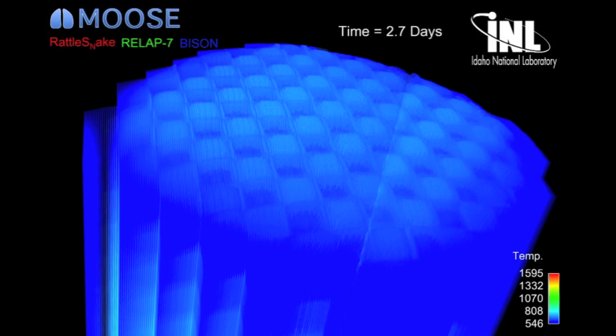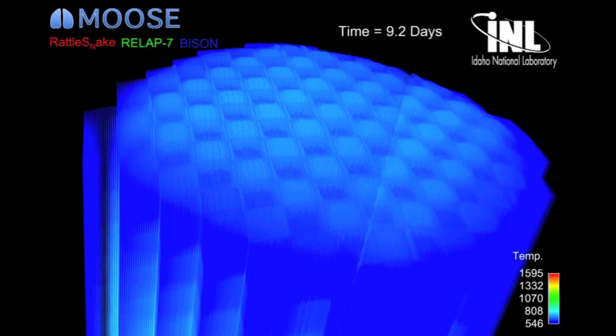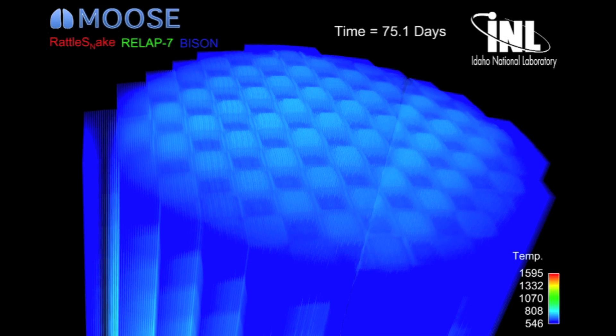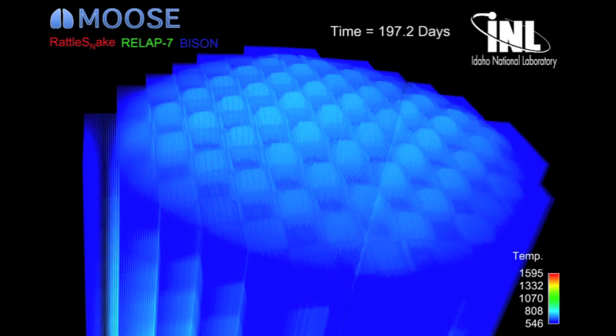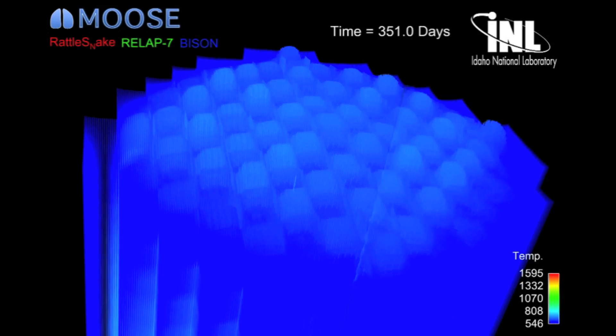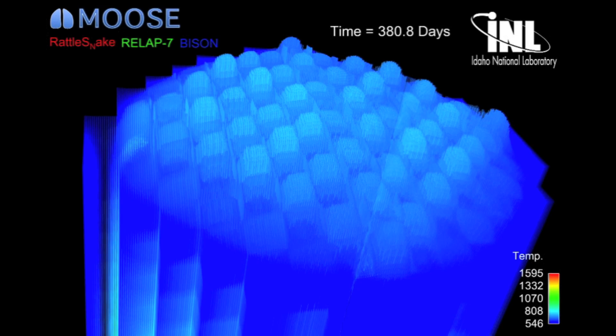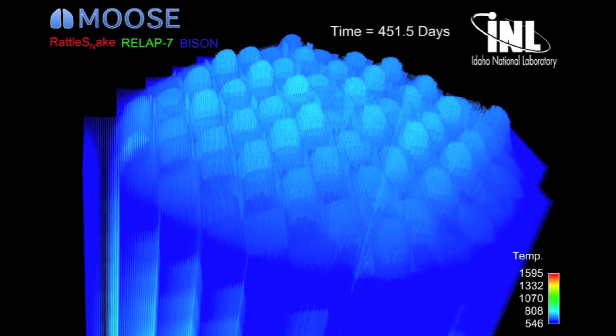We can actually start to get an understanding here of the behavior of the individual fuel rods throughout multiple cycles in a reactor. This simulation represents a unique capability to actually track what's happening to each of the individual 40,000 fuel rods within the reactor through several reactor cycles.